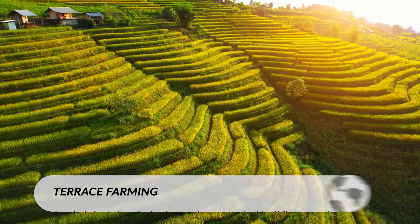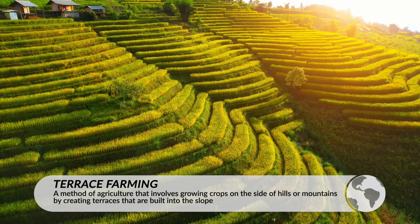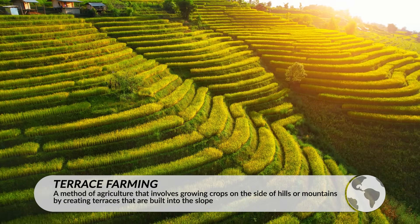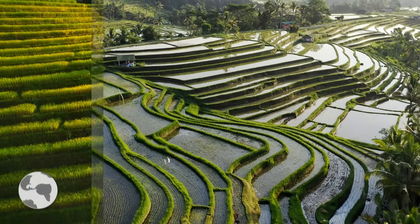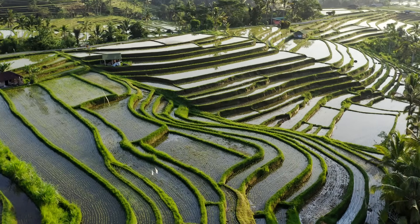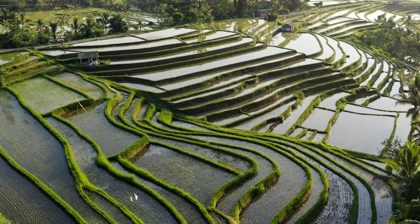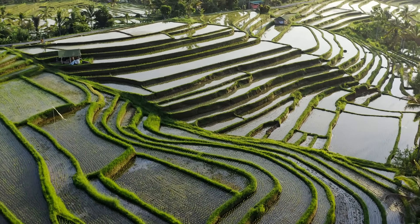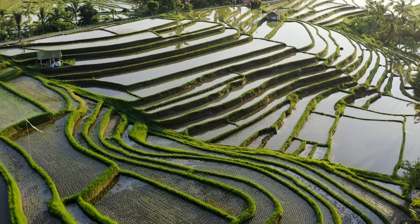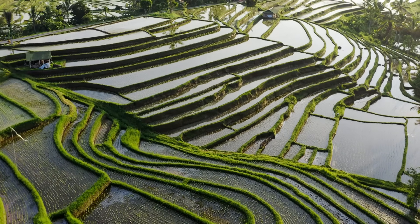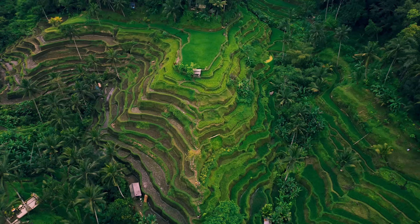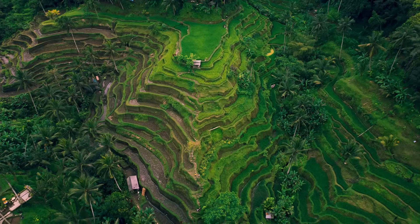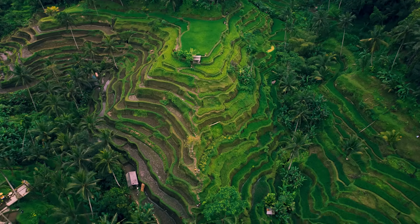Another type of agriculture that reshapes the local environment is terrace farming, which can often be found in Southeast Asia and other places with mountains or large hills. This type of agriculture is very labor-intensive to create and is utilized in areas that need to maximize their arable land to feed their population, but in doing so, they transform the natural landscape. If done correctly, it can decrease the amount of water runoff and can help increase food production in an area.